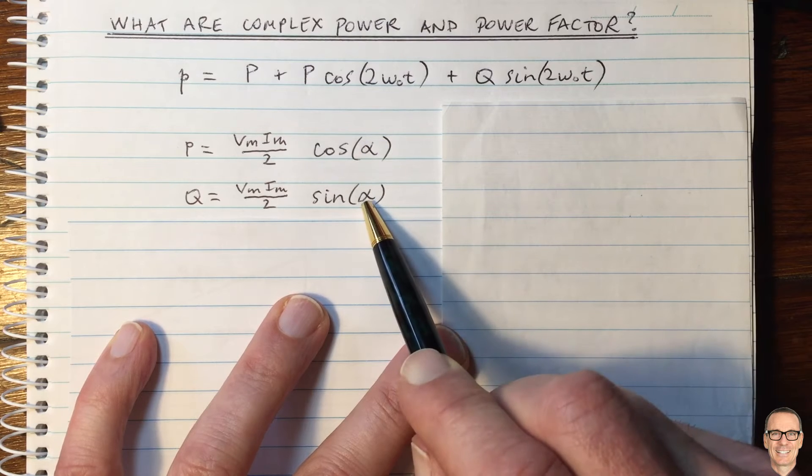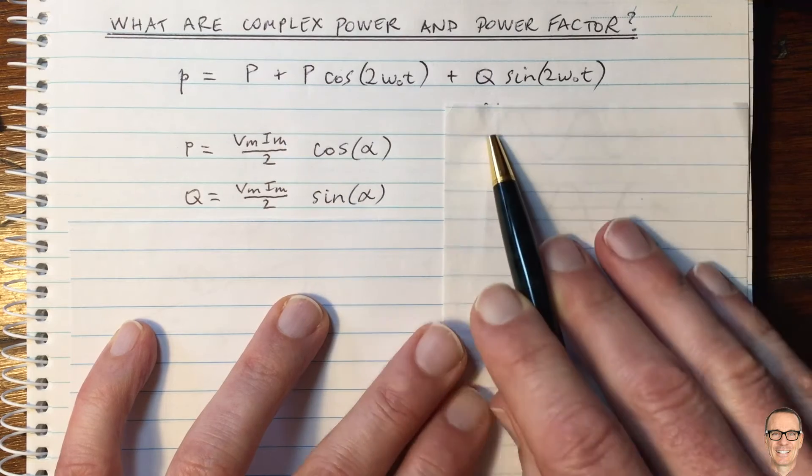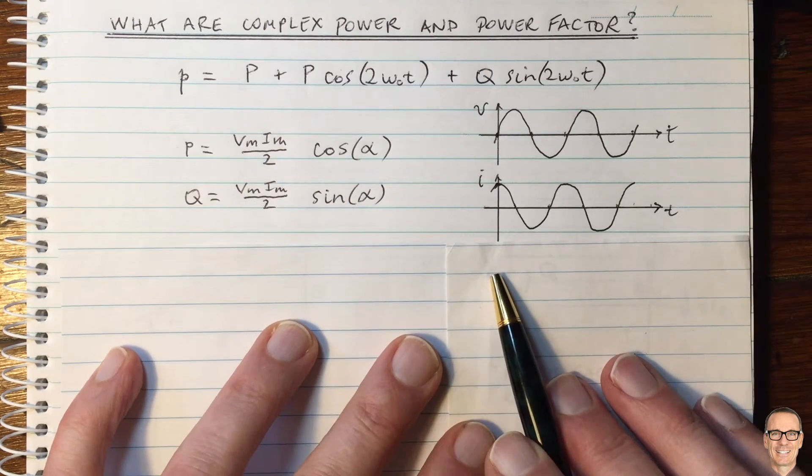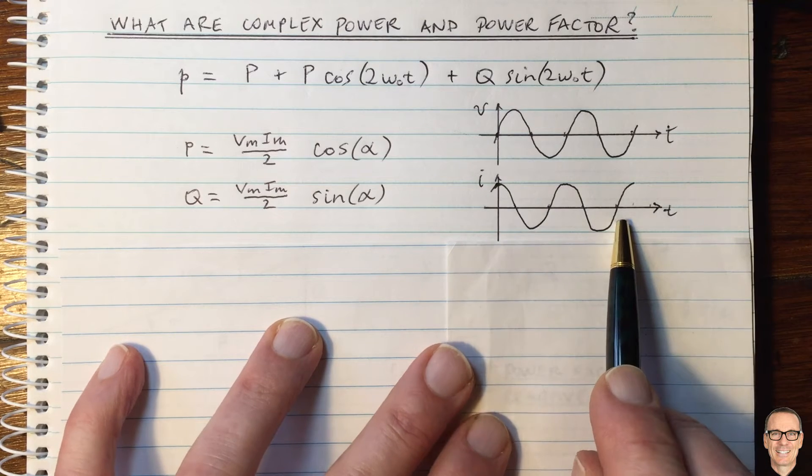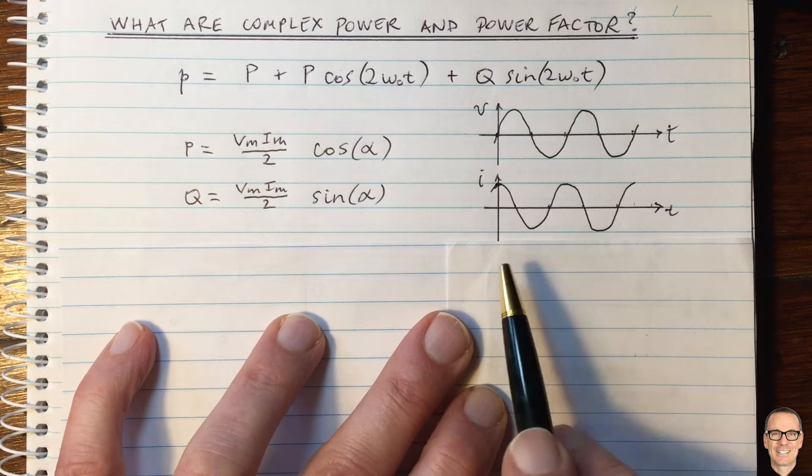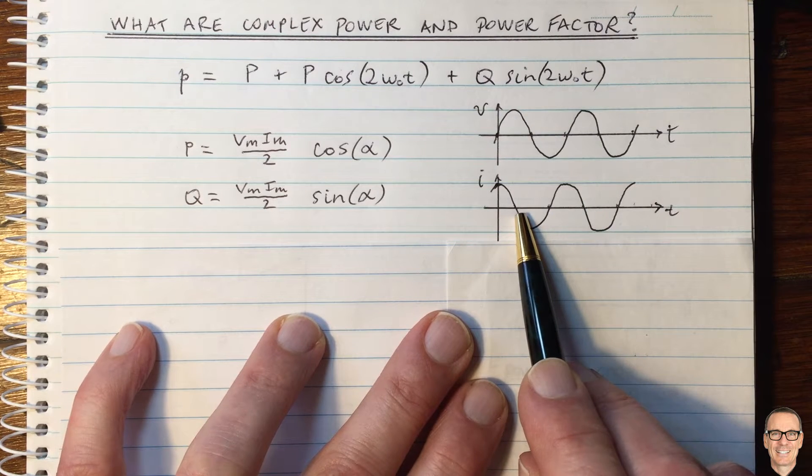So what is this alpha? Well, it's the difference between the phases of the voltage and the current. So I've just drawn an example here of the voltage waveform and the current waveform in a circuit, and when you have capacitors and inductors in your circuit, these waveforms will not be at the same phase.